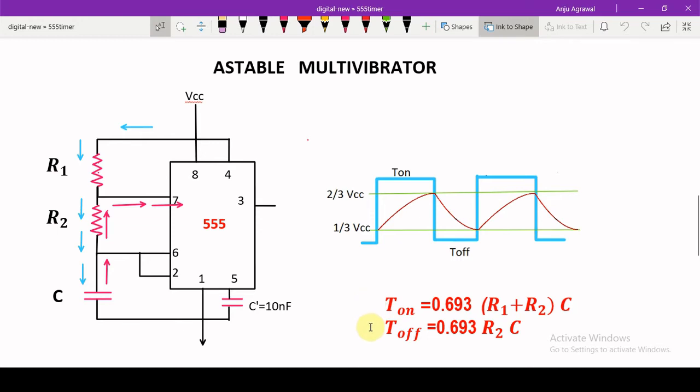So we can control the on time and off time by changing the values of R1, R2, and C, and the voltage across the capacitor also changes like this.